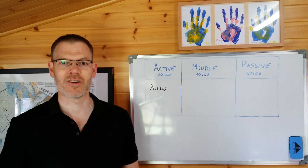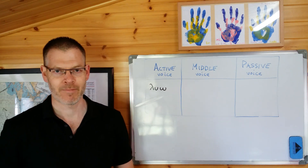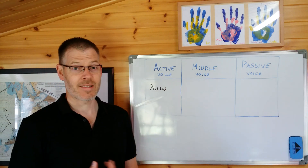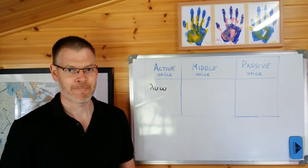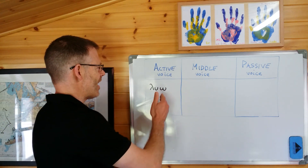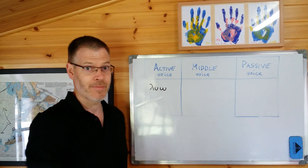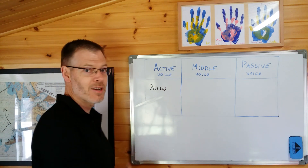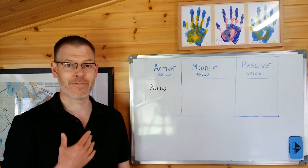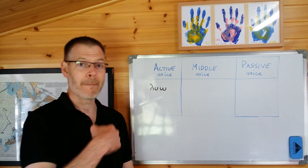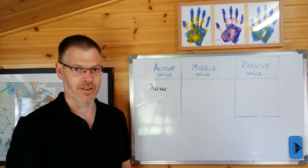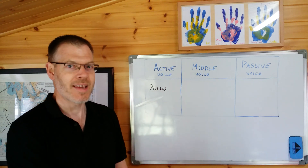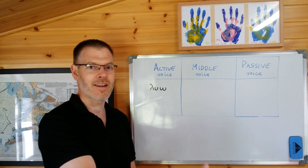I'm going to give you a fuller explanation of what deponent verbs are. In order to understand what a deponent verb is, we need to understand first the idea of voice in verbs. You're probably familiar with the distinction between active and passive voice. All of the verbs you've learned so far, verbs like luo, are in the active voice. Active verbs are verbs in which the action is done by the subject. So luo — I untie — I'm not the one being untied, I'm the one doing the untying. The subject does the action.